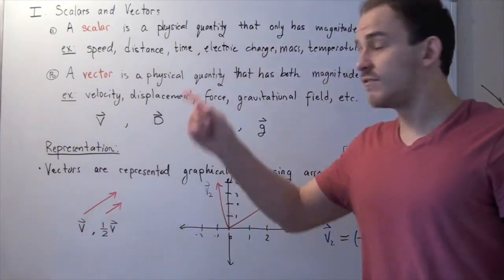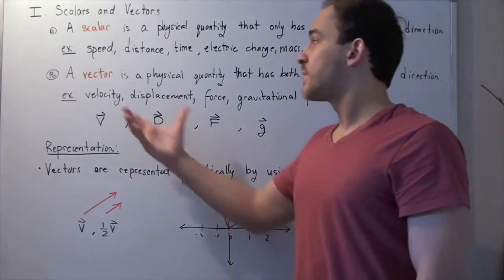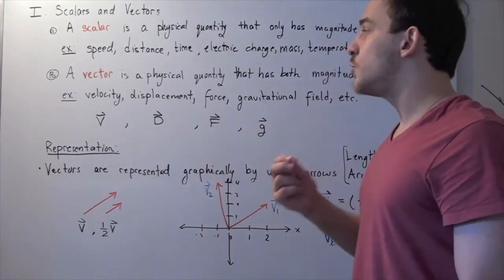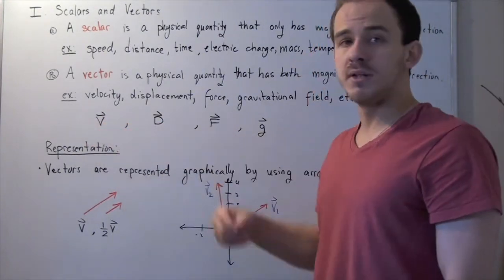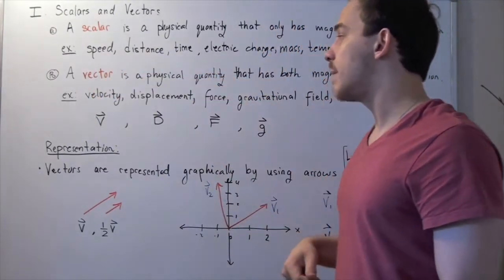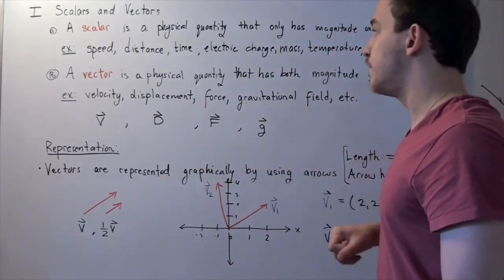So force, like velocity, displacement, and gravitational field, have both magnitude and direction. Now, the way you represent a vector is simply by writing the symbol and then writing an arrow on top. So this is how you write vector displacement, force, and gravitational field.